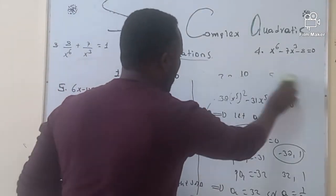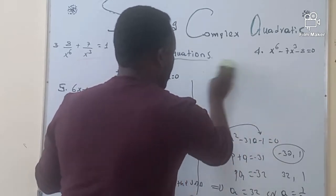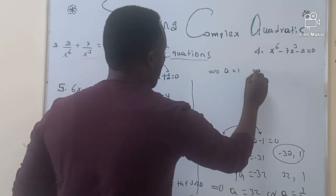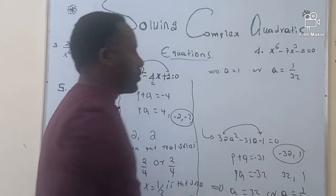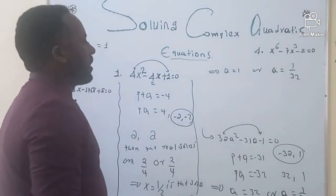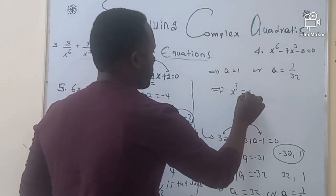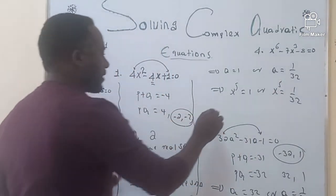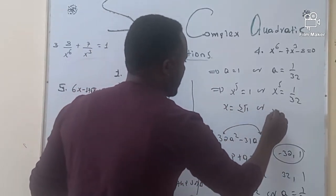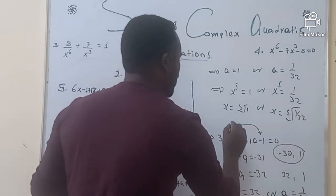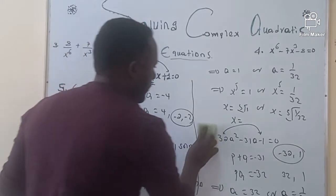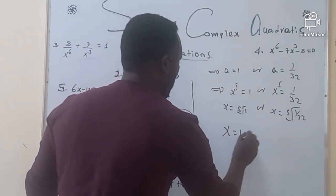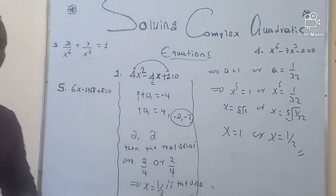Now let's come back to the previous substitution. A equals x raised to 5. This implies A equals 1 or A equals 1 over 32. So x raised to 5 equals 1, or x raised to 5 equals 1 over 32. Therefore x is the fifth root of 1, which equals 1, or x is the fifth root of 1 over 32, which equals 1 over 2.